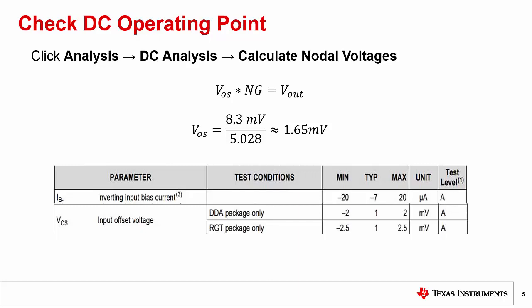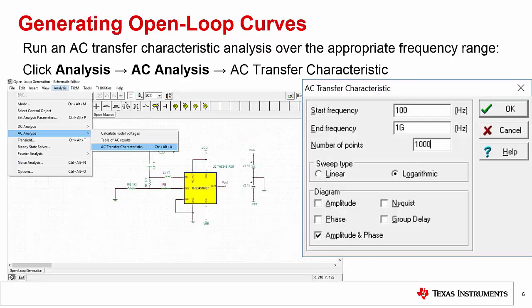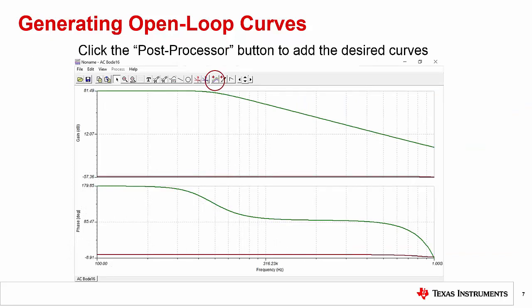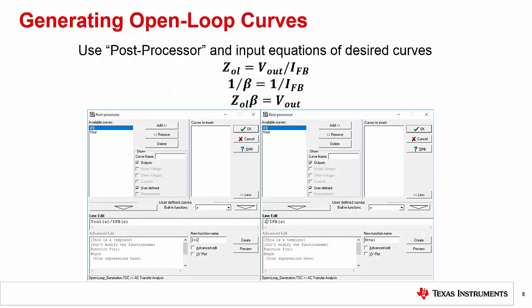Now that we have confirmed our amplifier is biased correctly, we can run an AC transfer characteristic analysis over the bandwidth of our amplifier. This can be done by clicking Analysis, AC Analysis, and choosing AC Transfer Characteristic. The start and end frequencies shown are set to match the frequency range used in the open loop response of the THS3491 datasheet. Once the analysis is run, we will see the magnitude and phase for our output voltage and error current curves, Vout and IFB. Similar to what is done with a voltage feedback amplifier, we will use the post processor to generate our open loop transimpedance, or ZOL, and our 1 over beta curve. In the post processor, the equations for ZOL and 1 over beta curves can be entered.